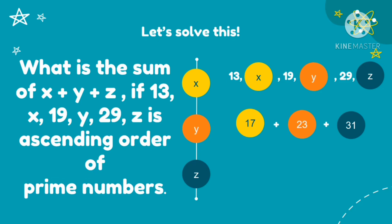Then we're going to get the sum of 17, 23, and 31. So when we add 17 plus 23 plus 31, we will get the sum of 71. Therefore, the sum of x plus y plus z is 71.